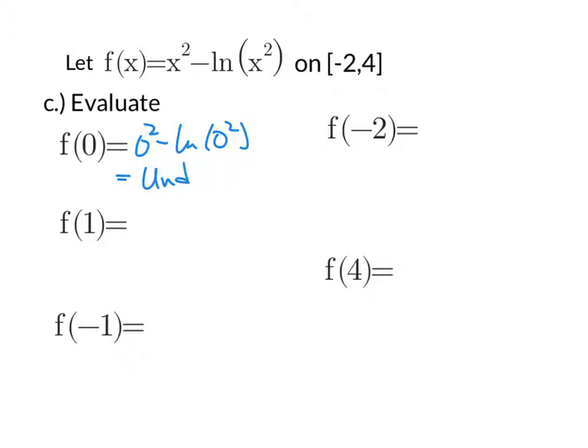For f of 1, I'm going to take 1 and plug it in there. 1 squared minus the natural log of 1 squared. That will be 1 minus 0, which is 1. Similarly with x equals negative 1, when I take negative 1 and square it, minus natural log of negative 1 squared, we'll again get 1 minus 0, which is 1.